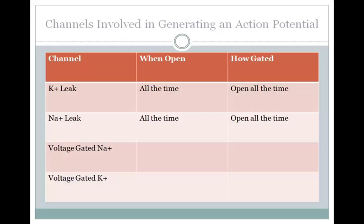There are four main channels involved in generating the characteristic shape of the action potential: potassium and sodium leak channels, which we talked about before, and voltage-gated sodium and voltage-gated potassium channels. The sodium-potassium ATPase does not appear on this list. The sodium-potassium pump is important for setting up concentration and electrical gradients, but over the couple-millisecond timescale of an action potential it does not play a major role. All of the ionic current — both sodium and potassium — flows through the leak and voltage-gated channels.